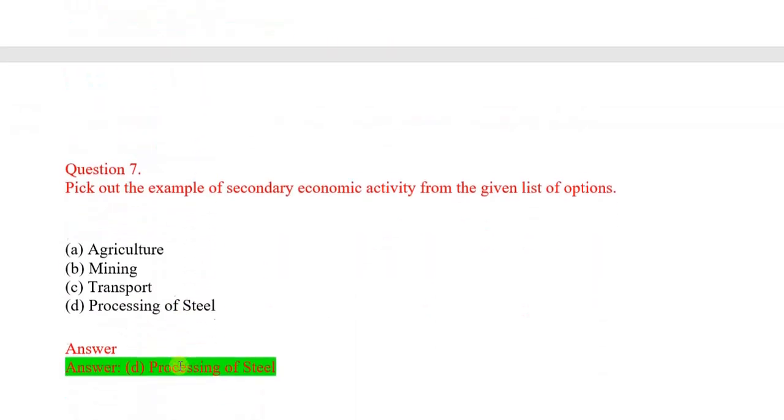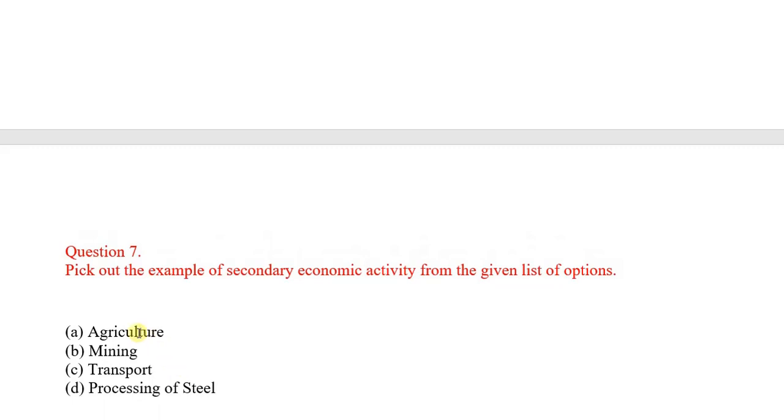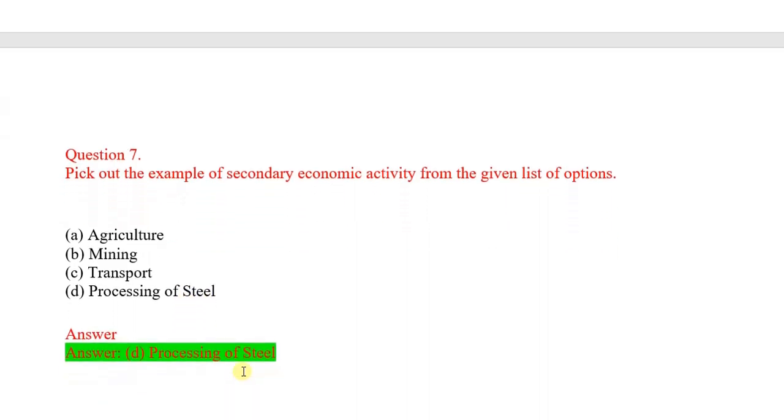Question number 7: Pick out the example of secondary economic activity from the given list of options. Options: agriculture, mining, transport, processing of steel. Correct answer: processing of steel.